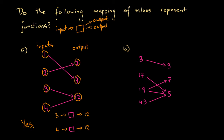Do the following mappings of values represent functions? Certainly mapping A does. This is a function because there is no input that delivers two different outputs when put into this mapping. Each one of these inputs is associated with only one output, and consequently it's a function.